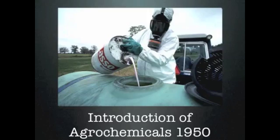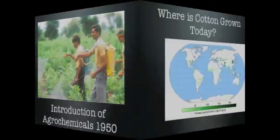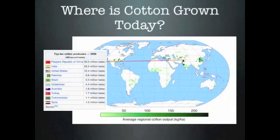Agrochemicals were first introduced in mechanized agriculture in the 50s and 60s, and even more recently in less developed societies. For example, in Pakistan's Punjab province, as recently as 1983, only 5-10% of the cotton crops were treated with chemicals. Whereas in 1991, agrochemicals were applied to 95-98% of the cotton crops.